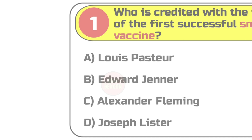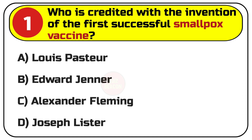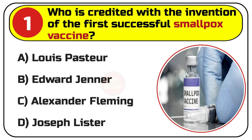Question number 1. Who is credited with the invention of the first successful smallpox vaccine? Options are: A. Louis Pasteur, B. Edward Jenner, C. Alexander Fleming, D. Joseph Lister.